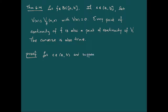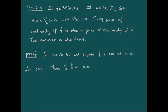If we pick some point c in the open interval (a, b), let's suppose that f is going to be continuous at c. Any time we're talking about continuity, we take epsilon greater than zero. f being continuous means there exists a delta-hat greater than zero such that if |x − c| is less than delta-hat, then the absolute value of f(x) − f(c) is going to be less than epsilon over 2.